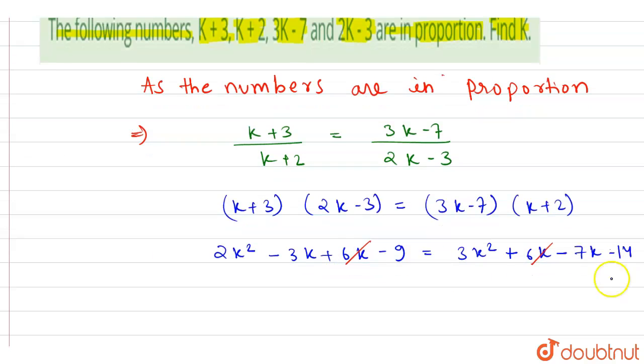This will become 3K² - 2K² - 7K + 3K - 14 + 9 equal to 0.